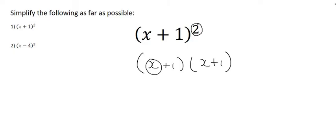You take this x and multiply it with both terms, then take the positive one and multiply it by the x and the positive one. Step one: multiply x and x to get x squared. Step two: multiply x with one to get x.